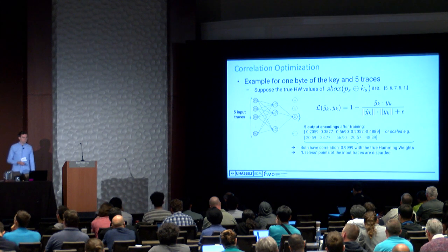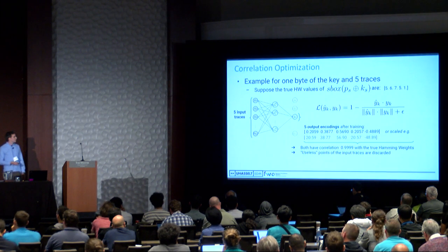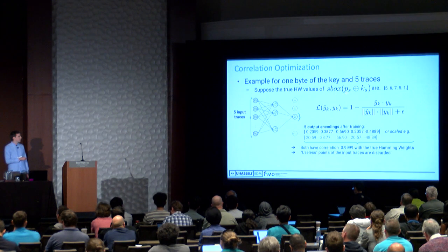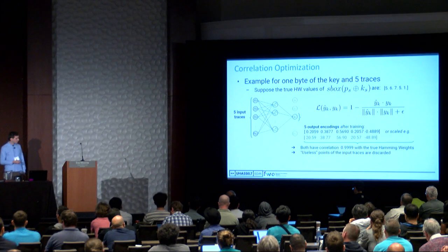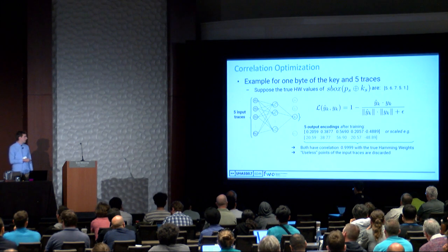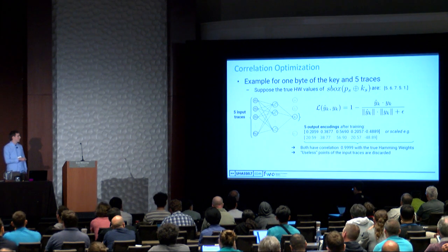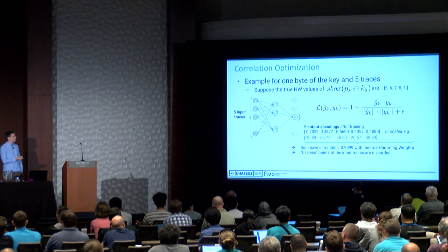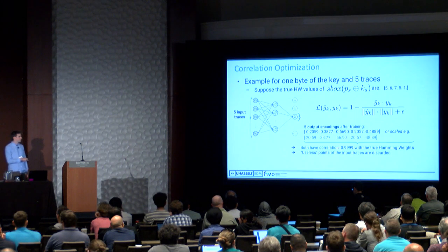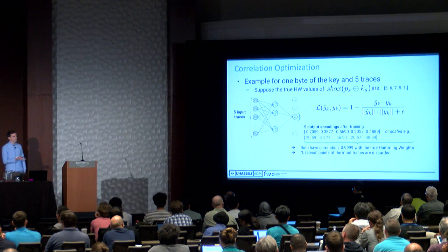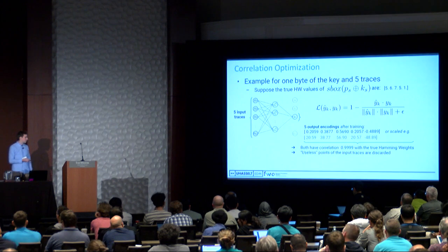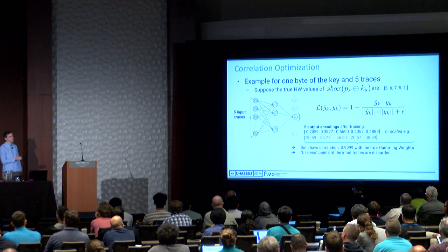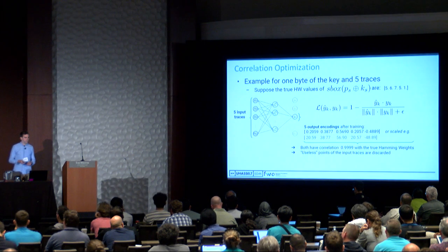As a concrete example, suppose we have five traces and want to predict for one byte of the key what the leakage would look like. Suppose the true Hamming weight values of the intermediate value—S-box of P_s XOR K_s—are 5, 6, 7, 5, and 1. We feed the input traces to the neural network and optimize the correlation with those true values. The output values are very strongly correlated with the true Hamming weight values—in fact, with a correlation very close to 1. Because Pearson correlation is independent of scale, we still have a large correlation with the actual Hamming weight values. In essence, we discard the useless points from our traces and end up with only one point representing all the information needed to perform an effective CMA attack.